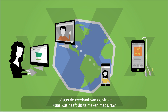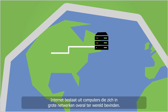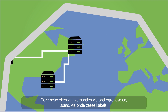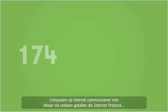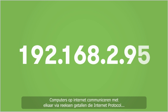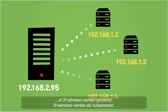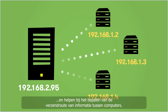But what does DNS have to do with this? The Internet is made up of computers that are set up in large networks around the world. These networks are connected by a web of underground and, in some cases, undersea wires. Computers on the Internet communicate with each other using strings of numbers called Internet Protocol, or IP addresses. IP addresses function like street addresses — they identify where a computer is located on the Internet and help guide the information traveling between computers.